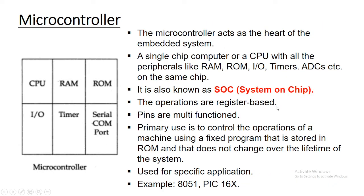On the other hand, the microcontroller is the heart of an embedded system. To make a complete microcomputer system, the microprocessor alone is not sufficient — we have to add other peripherals like ROM, RAM, decoder, drivers, and a number of input/output devices. However, in a microcontroller, as you can see in the diagram, on a single chip there is a CPU, RAM, I/O, timer, serial port, and other functionality — everything is fabricated on a single chip.